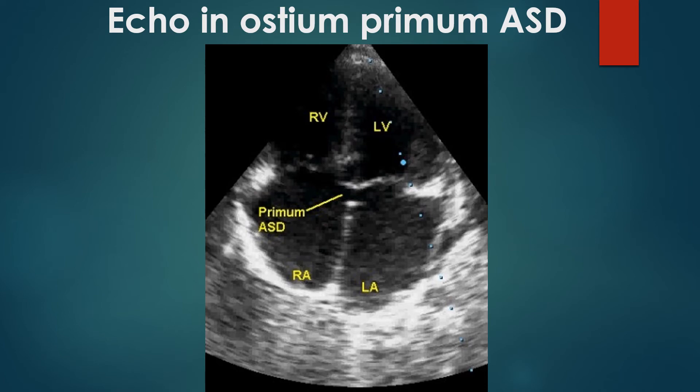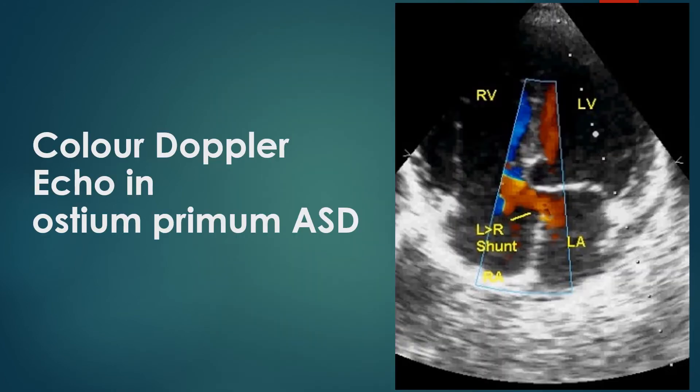A similar defect in the tricuspid valve can cause tricuspid regurgitation. Another association of ostium primum ASD is the inlet or canal ventricular septal defect.